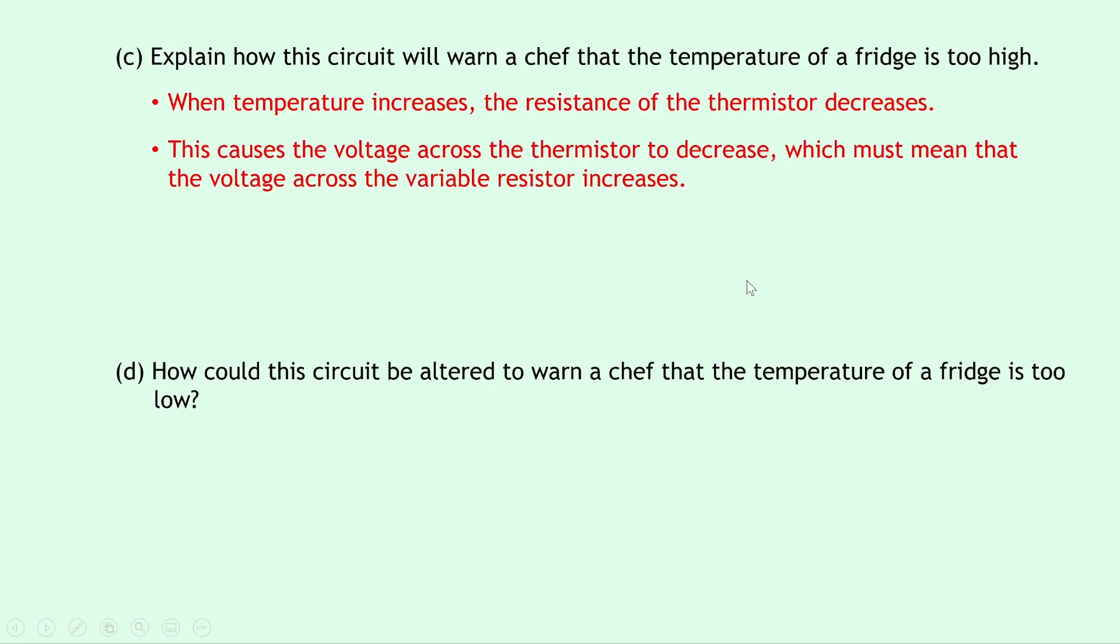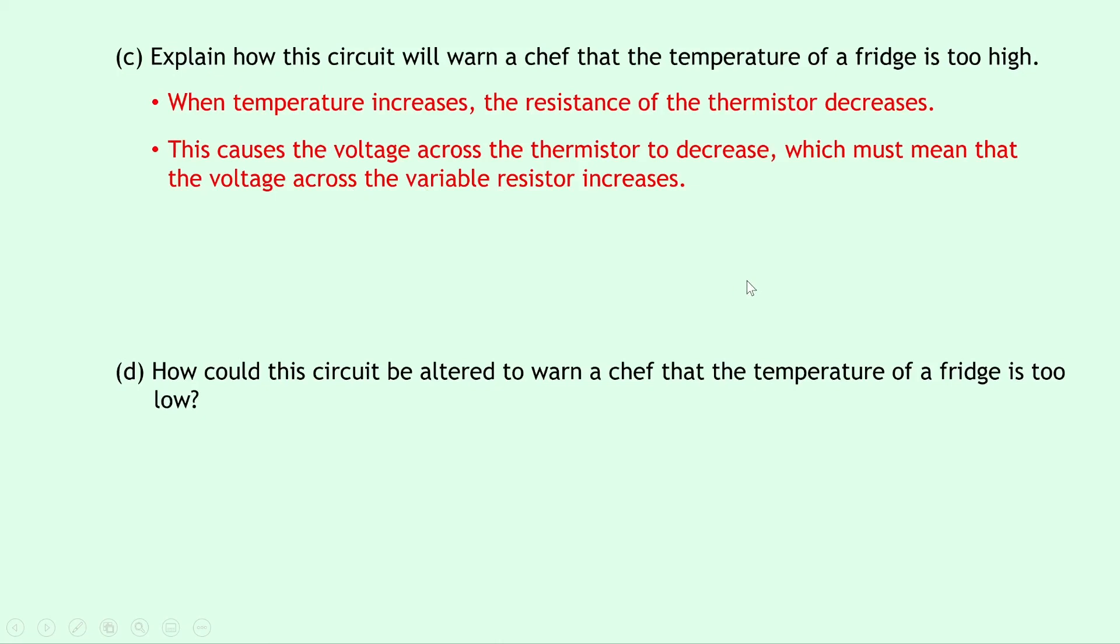And just to show you why that works, if we look back at the circuit diagram, so we're saying that as temperature goes up, the resistance of this thermistor goes down, so that means the voltage across the thermistor goes down. And because these two components with the power supply make up a potential divider circuit, remember that these two will take a share of the supply voltage. So if the voltage across this one is decreasing, then it means that the voltage across the variable resistor must be increasing.